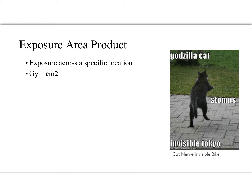Exposure area product — we're borrowing from air kerma. We're expressing this in gray centimeters squared. This is a measure of how much of the body was exposed to radiation. Gray centimeter squared is going to tell us what the amount of exposure was to a specific location, putting it over a geometrical location.